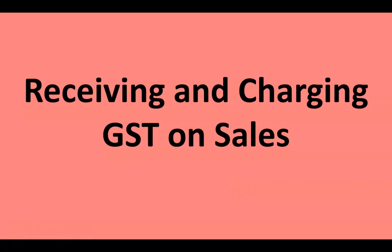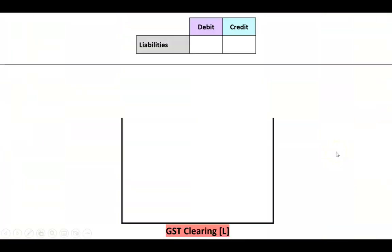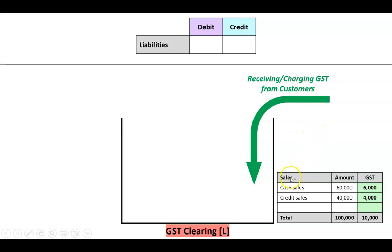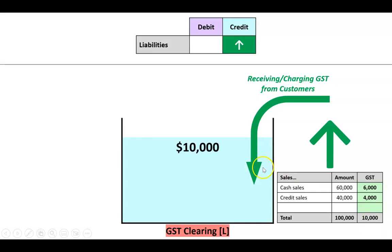Let's look at how to process GST when we are receiving and charging GST on sales. GST clearing is a liability - we use an analogy that it's like a big top. Because it's a liability it has the rules of debits and credits of a liability, just like a loan or accounts payable. When the business makes sales - in this case $60,000 and $40,000 - it charges GST on those sales whether they're cash or credit. When we charge GST to customers, the liability goes up. In this case the liability will go up $10,000, and that would be a credit in our GST clearing ledger - meaning the business owes the government ten thousand dollars.